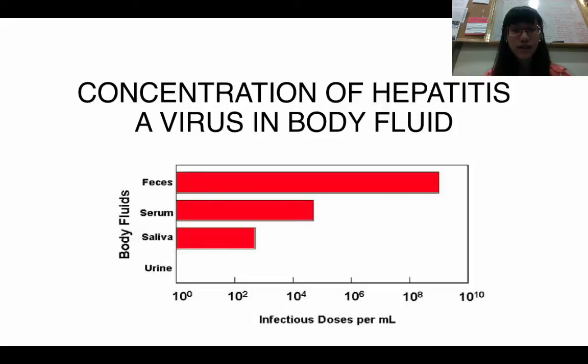Here's the graph showing the concentration of Hepatitis A virus in body fluids. The virus is mostly found in feces, at about 10 to the 9th viruses per milliliter, followed by serum and saliva, with nothing in urine.